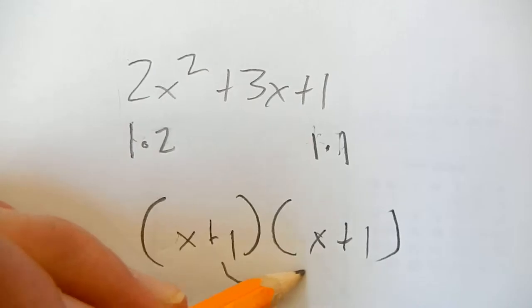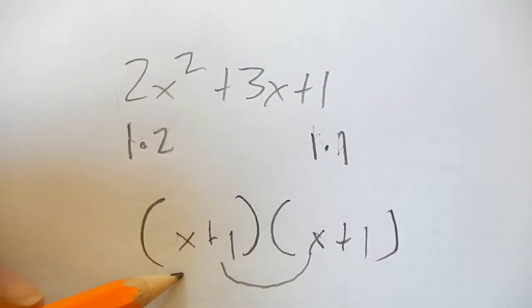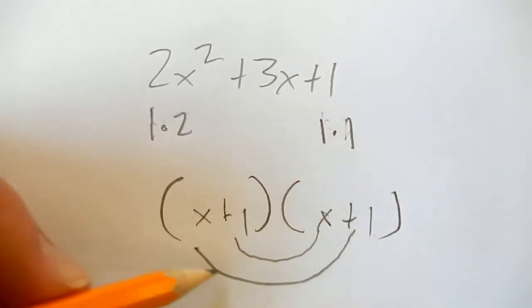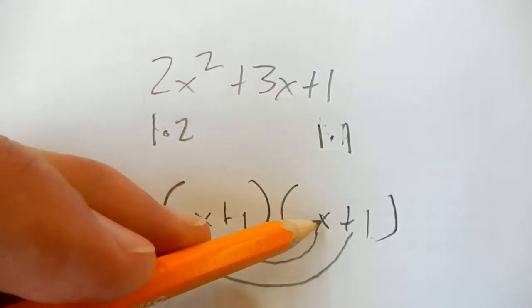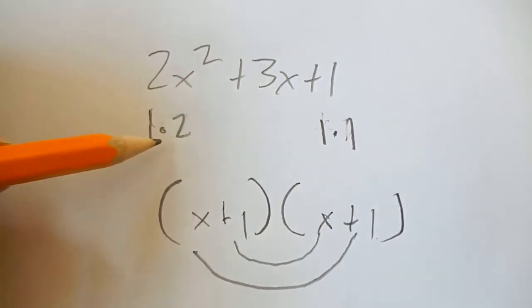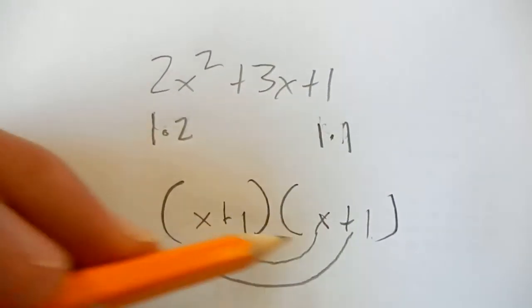And usually you have to worry about how you place these factors. Like, you know, it'll be 1 times whatever's here, 1 times whatever's here. In this case, you don't. But you want these products to add up to 3.